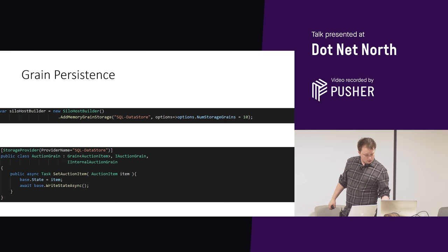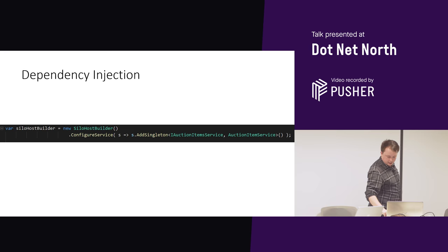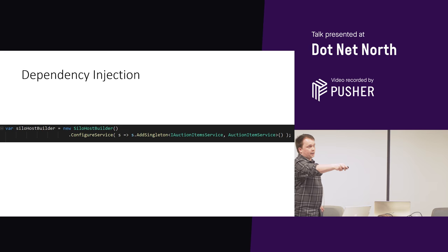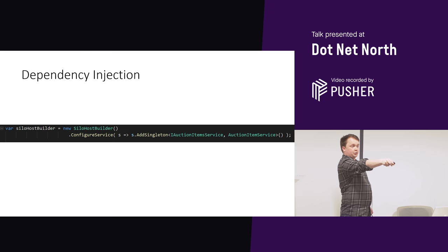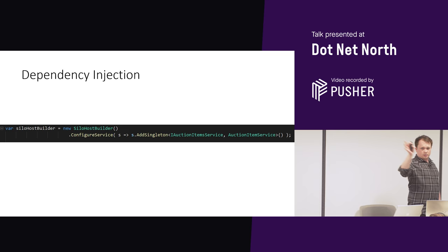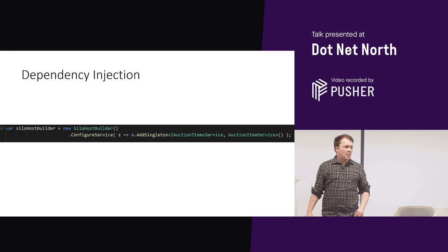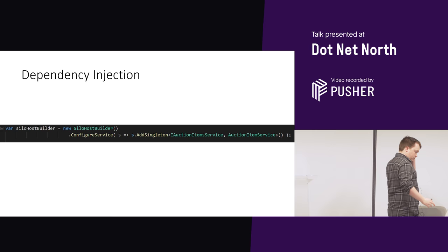Let's go on to a bit more setup. In our silo host builder, just nice and fluent, we say: I'm going to configure the services, I'm going to add an AuctionItemService, and it looks like this. That type isn't a grain — that's just whatever your data service is, could be HTTP, could just be a SQL wrapper. But now you can just inject that into a constructor of a grain any time you want — but don't trust it to act like actors.